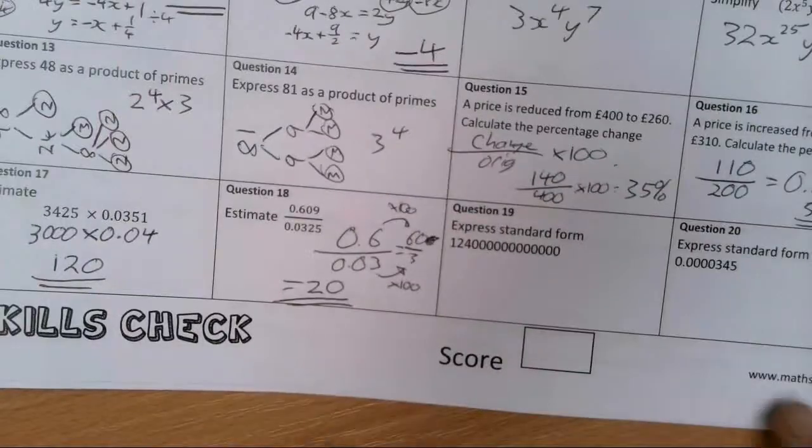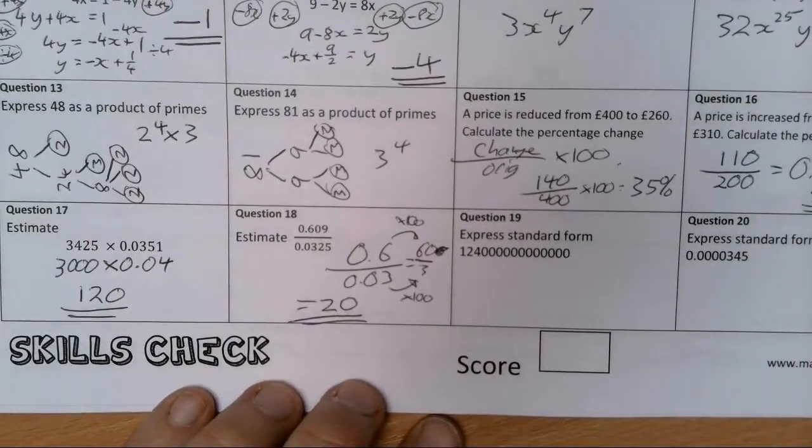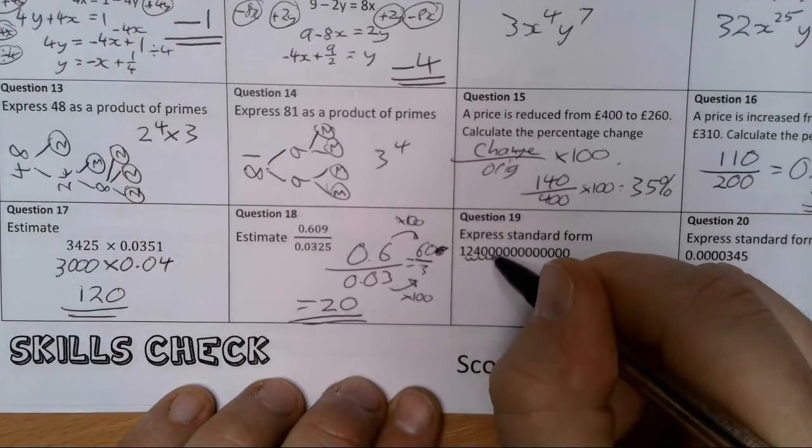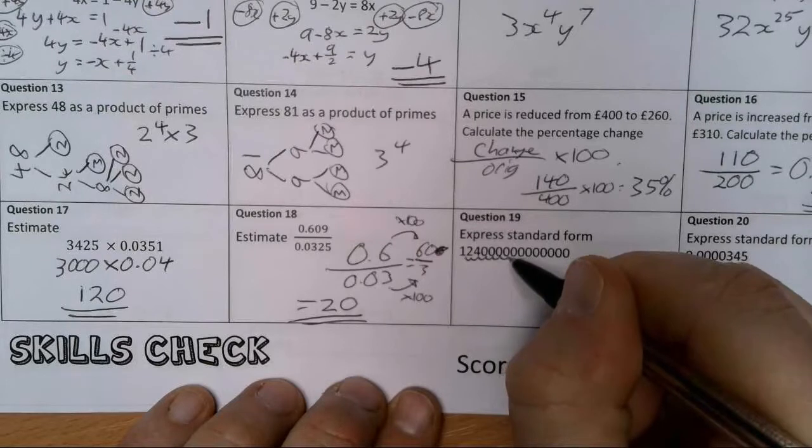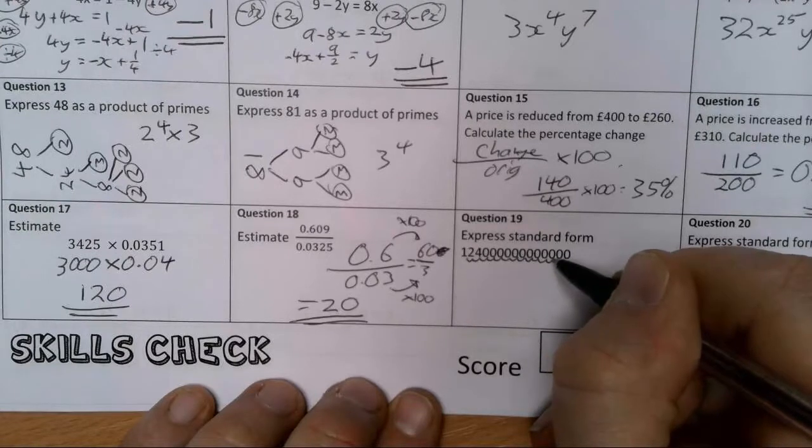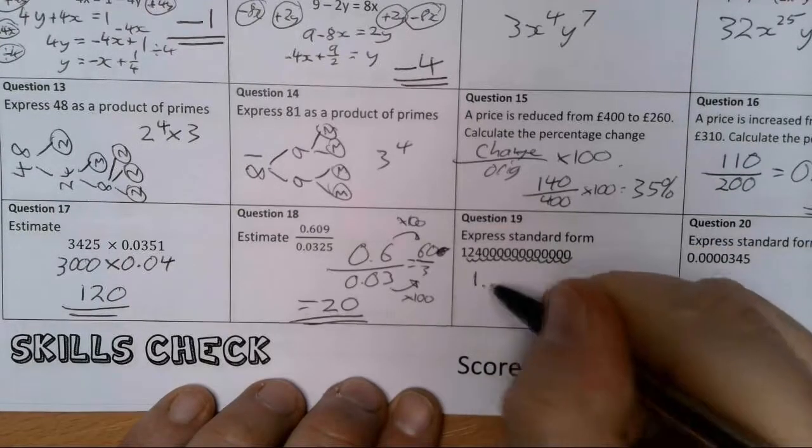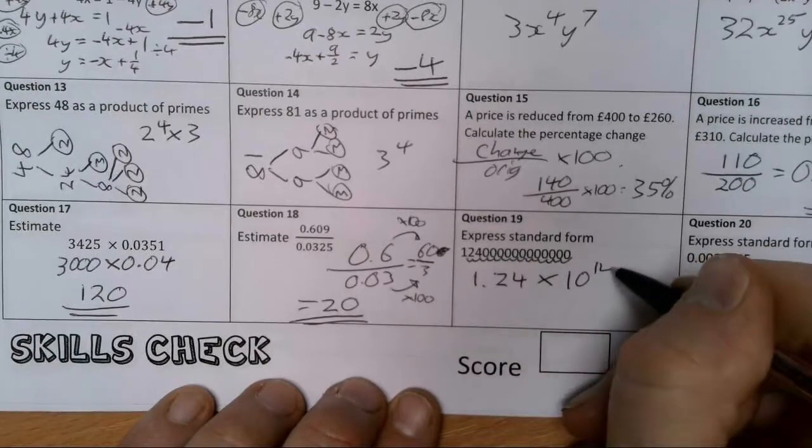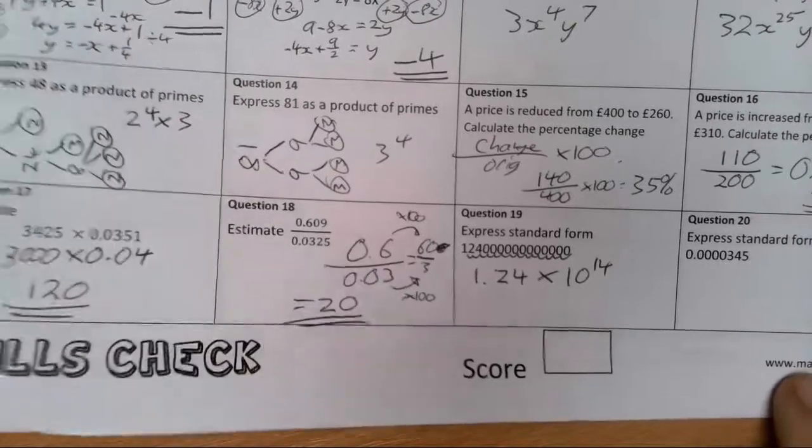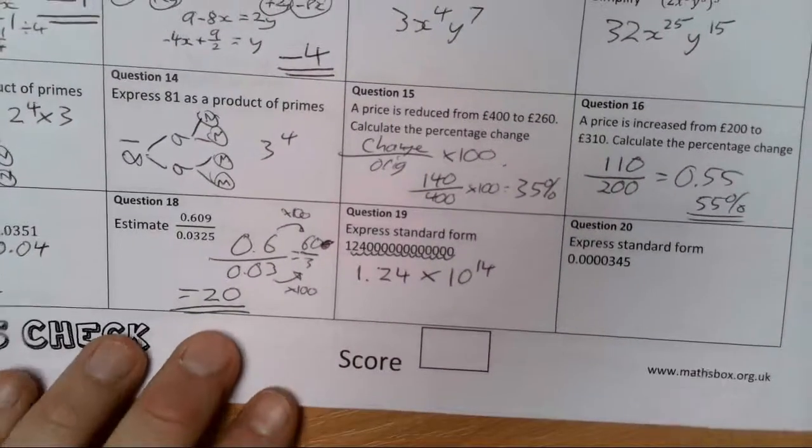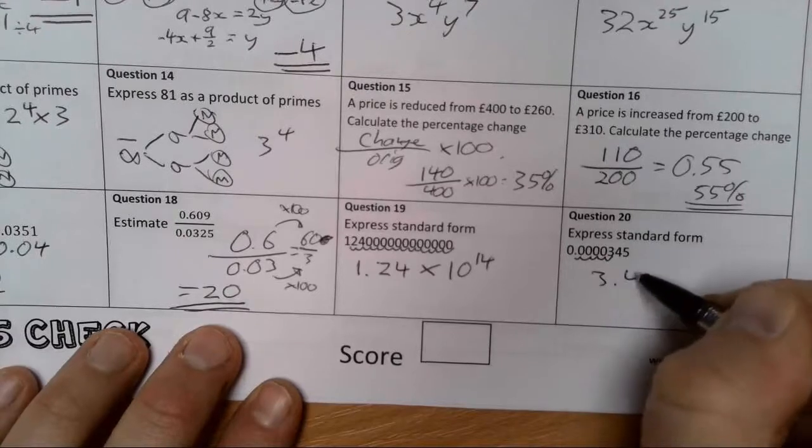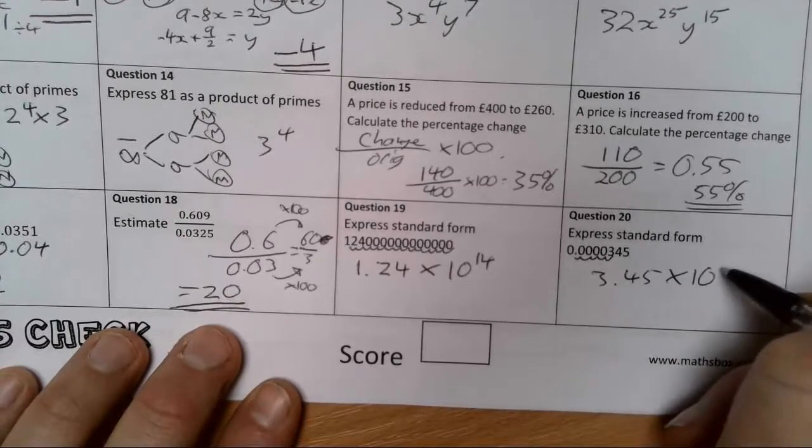Express in standard form. You've just got to be careful here, there's lots of zeros, more zeros than I've seen recently. Right, 1, 2, 3, 4, 5, 6, 7, 8, 9, 10, 11, 12, 13, 14. 1.24 times 10 to the power 14. I've got to go from between the 1 and the 2 there. And this one, 1, 2, 3, 4, 5. 3.45 times 10 to the minus 5.